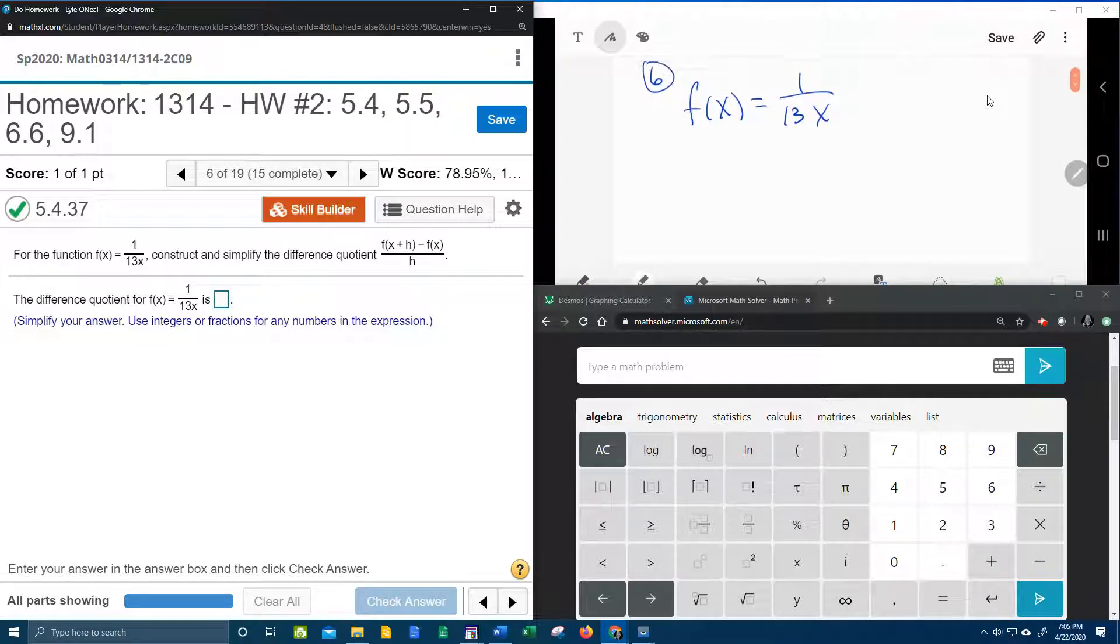What I like to start with is just copying down the difference quotient. So the difference quotient is f of x plus h minus f of x, all over h.